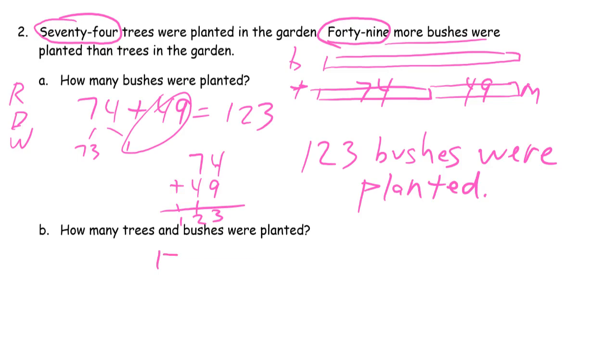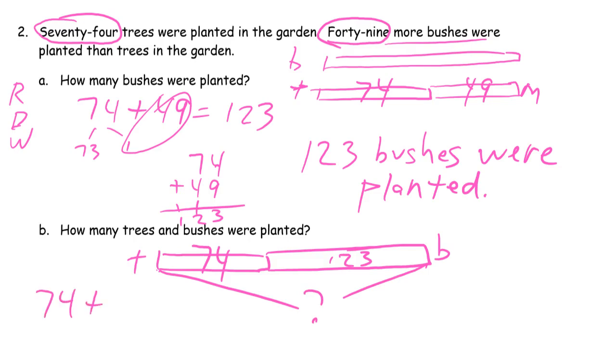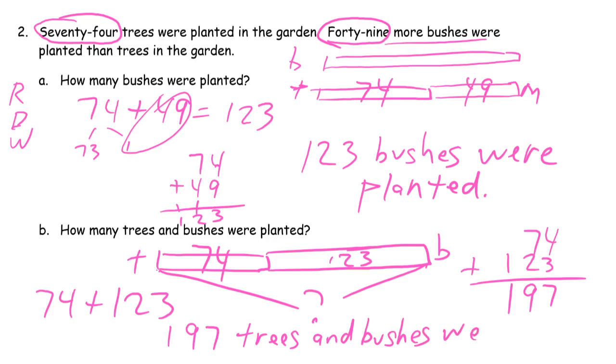And now we want to know trees and bushes. So we know how many trees there are because they told us in the beginning. Trees are 74. We just figured out how many bushes there are, 123. So the two together, 74 plus 123. Let's use vertical method. And our ones, 4 plus 3, that's 7. 7 plus 2, that's 9. And 100, that's 197. 197 trees and bushes were planted.